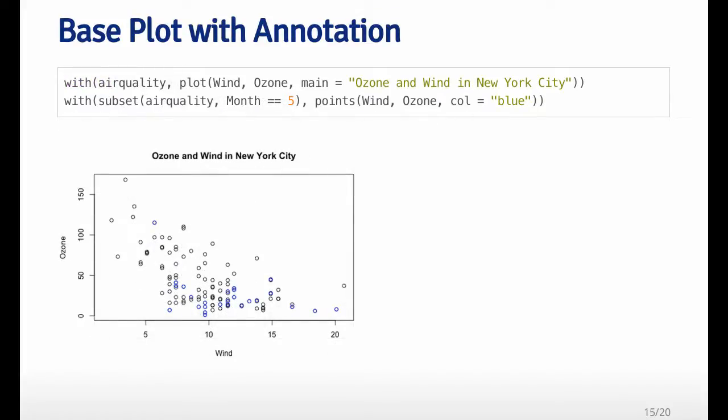In this plot, I'm again doing a scatter plot. But instead of using the title function to add the title, I put the title directly into the call to plot. But then what I want to do is I want to subset... I want to plot all of the data points that are in the month of May a different color. So what I do is I subset the data frame just to include the observations where month equals 5.